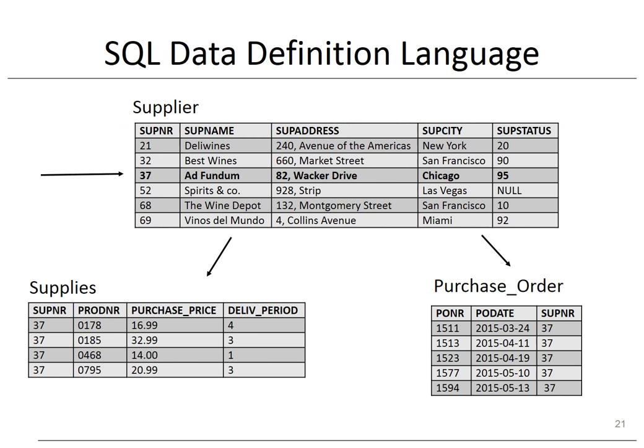Here you can see this illustrated with some tuples of the supplier table. Let's focus on supplier number 37, whose name is AdFundum. This supplier has 4 referring supplies tuples and 5 referring purchase order tuples. Suppose we update the supplier number to 40. In case of an ON UPDATE CASCADE constraint, this update will be cascaded to all 9 referring tuples. In case of ON UPDATE RESTRICT, the update will not be allowed because of the referring tuples. If we remove supplier number 37, then ON DELETE CASCADE will also remove all 9 referring tuples, while ON DELETE RESTRICT will not allow the removal. It is important to specify these referential integrity constraints in close collaboration with the business user.